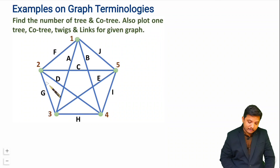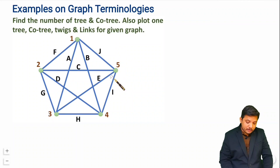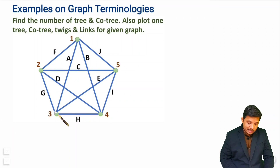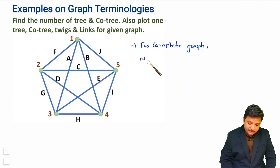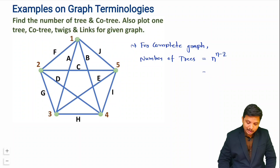Whenever you see a graph, first check whether it is a complete graph or not. A complete graph means all the nodes are connected with each other. You can observe that every node here is connected with all the other nodes, so this given graph is a complete graph. For a complete graph, the number of trees equals n to the power n minus 2, where n is the number of nodes.